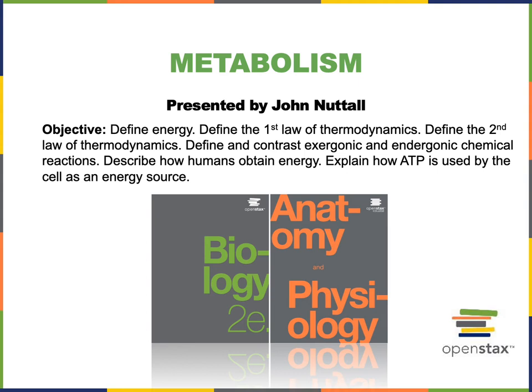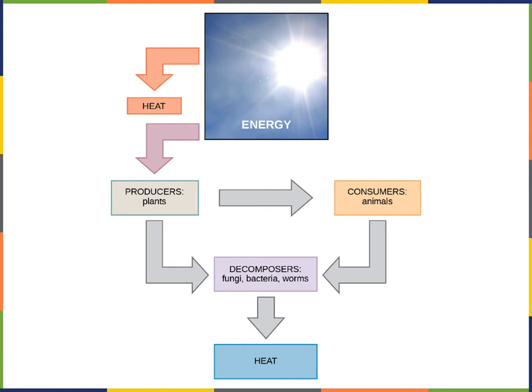Energy is the potential to do work or heat an object. Energy flows into our planet from the sun — you can notice the energy of light being transformed into heat energy as the sun warms your skin. Plants are producers that can transform the energy from sunlight into chemical potential energy in the process of photosynthesis, producing carbohydrates like glucose, sucrose, fructose, and starches. The energy that drives these anabolic pathways comes from sunlight.